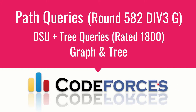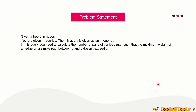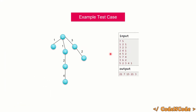The problem statement is quite simple. You are given a tree with n nodes and m queries. In the i-th query you are given an integer qi, and you have to calculate the number of pairs of vertices u,v such that the simple path between them does not contain any edge with weight greater than qi. The tree is a weighted tree.